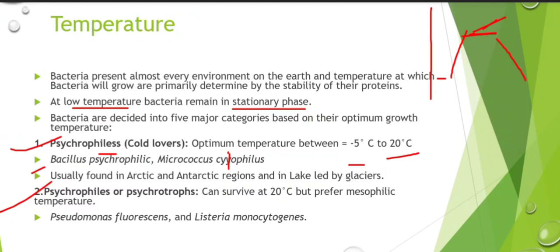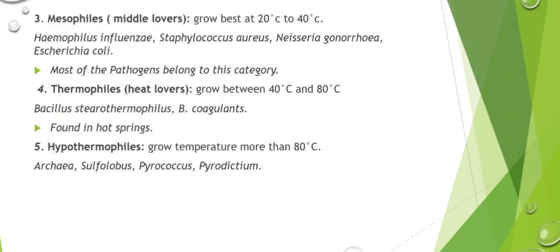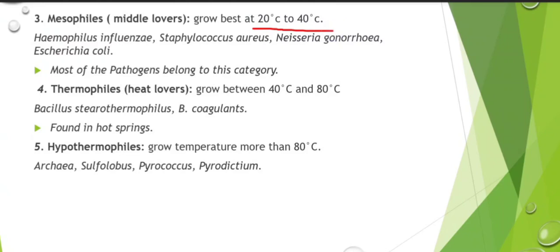Psychrotrophs are bacteria that can survive at twenty degree centigrade but prefer mesophilic temperatures. Examples of psychrotrophic bacteria are Pseudomonas fluorescens and Listeria monocytogenes. Now let's see mesophiles — these grow in the middle temperature range, from 20 degree centigrade to 40 degree centigrade. An example is Haemophilus influenzae.